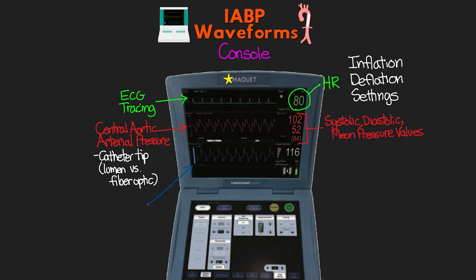Below the arterial pressure waveform, in blue, you're going to see the balloon pressure waveform. On the far left, you'll see a little animation of the balloon inflating and deflating. To the right of the waveform, you'll see the augmentation pressure displayed in white — this is something I'll discuss more in a minute. I will come back to this screen throughout this lesson and the remaining lessons in the series.